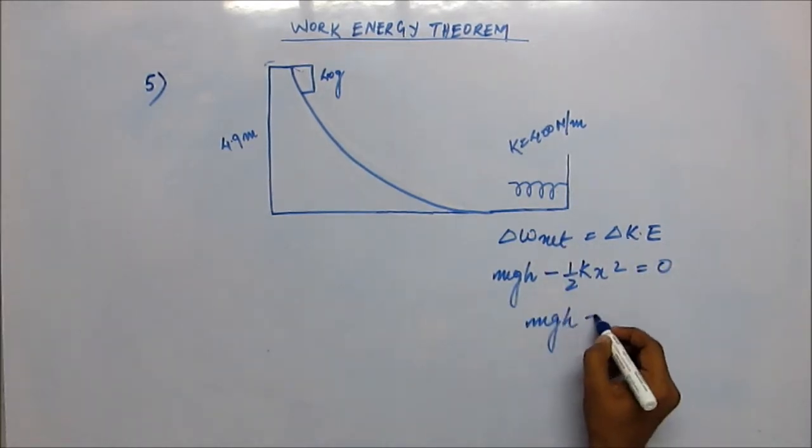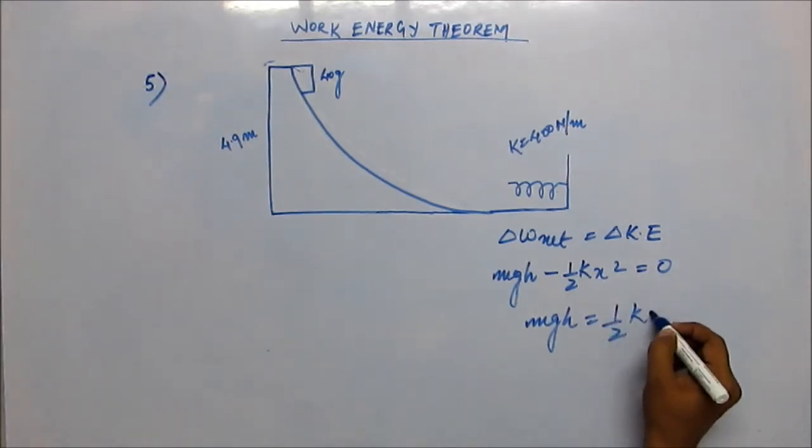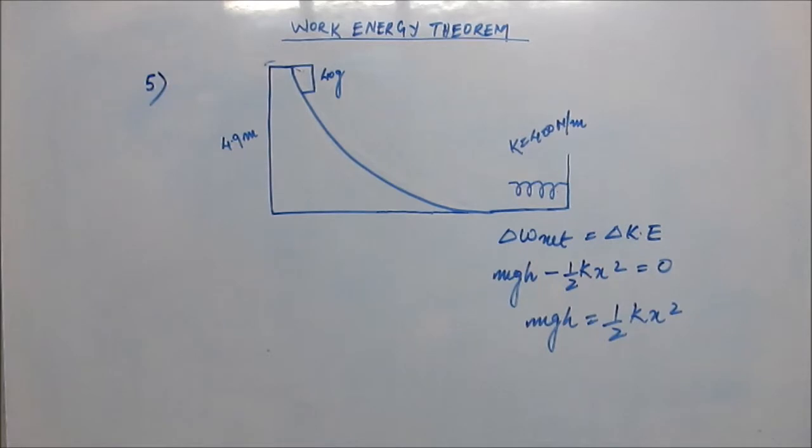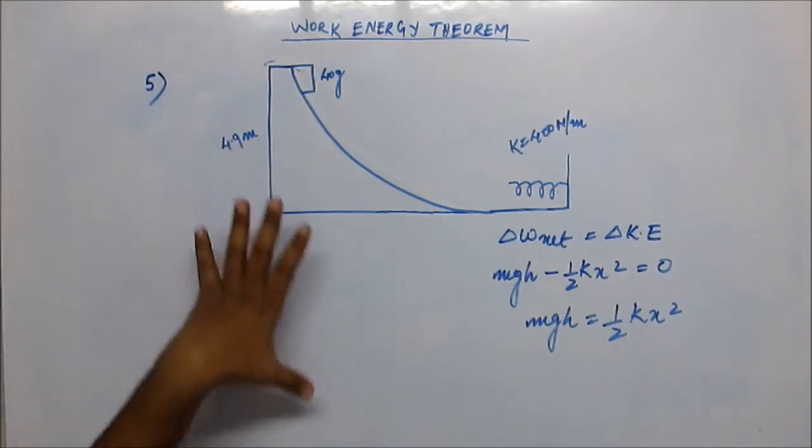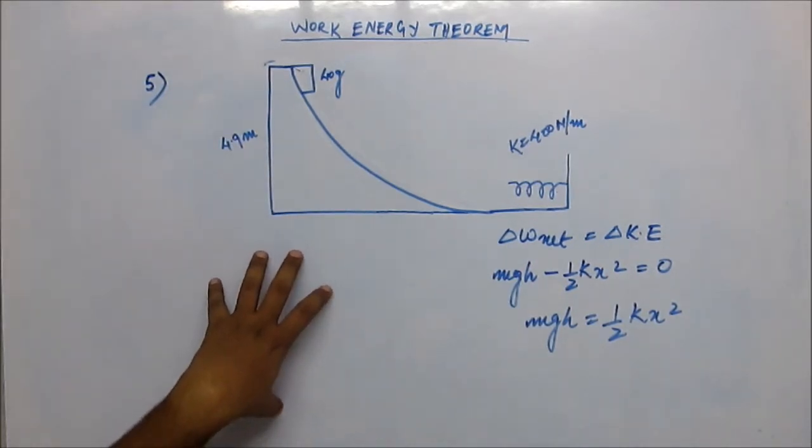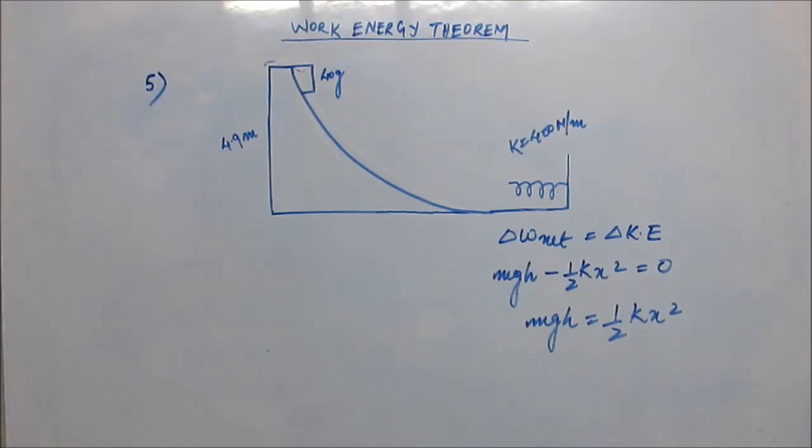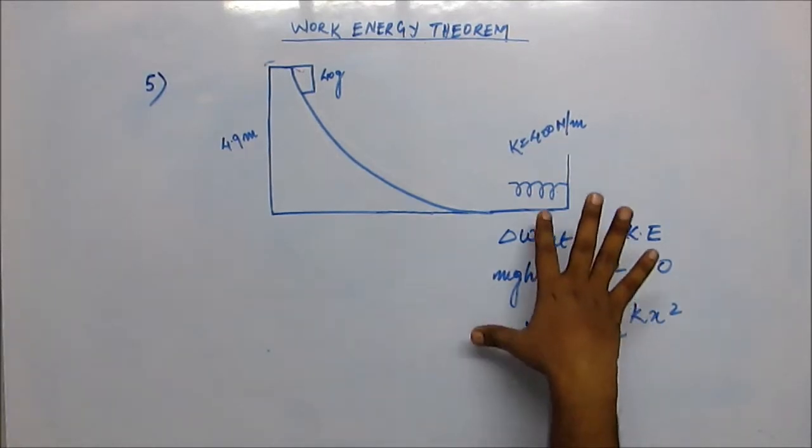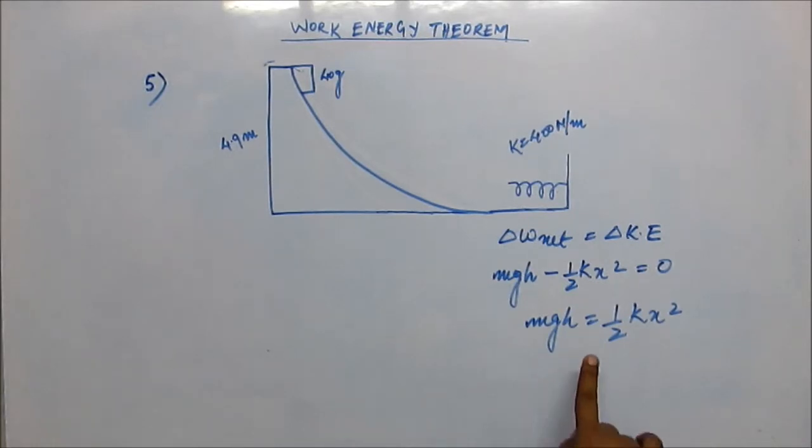That gives mgh equals half k x squared. If you would have used energy conservation, the drop in gravitational potential energy would equal the net increase in the spring potential energy. The drop in gravitational potential energy is mgh, the increment in spring potential energy is half k x squared, so the same equation.